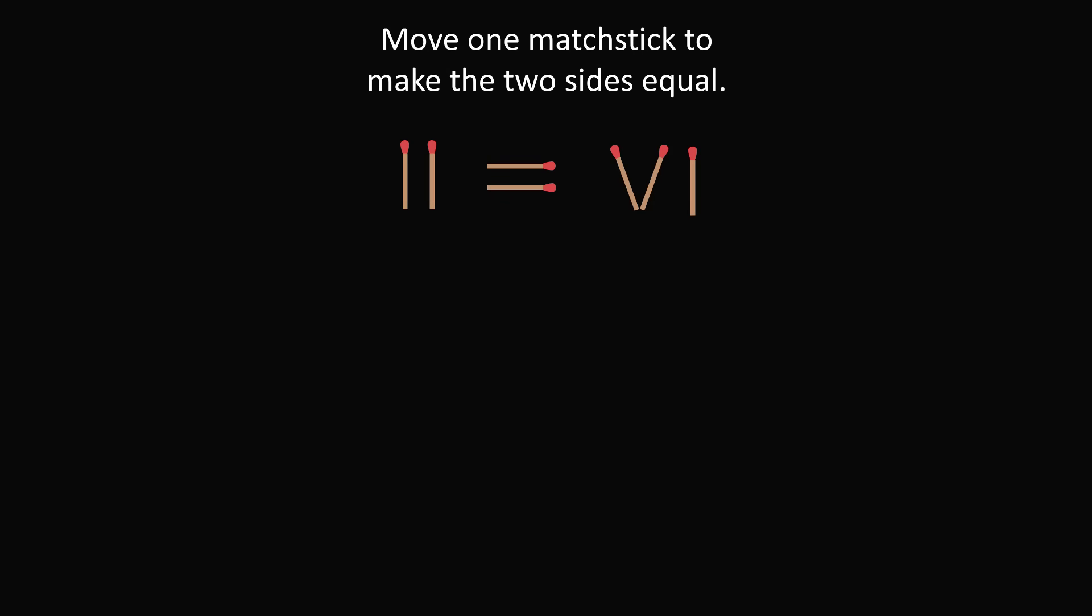This is a delightful problem, and there are multiple ways to solve it. So, one way is to move either of the first two matchsticks and make the V have a horizontal line over it. So, we end up forming the square root symbol. So, we have 1 is equal to the square root of 1.